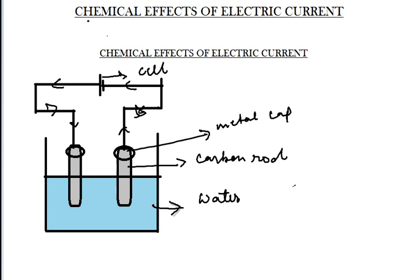What is the reason for the formation of bubbles? It is due to chemical reactions that occur inside the water when the electric current flows through it. Many such chemical changes take place, like the deposition of metals, changing of colours, and formation of bubbles. So chemical effects are surely produced when electric current is passed through a certain solution.